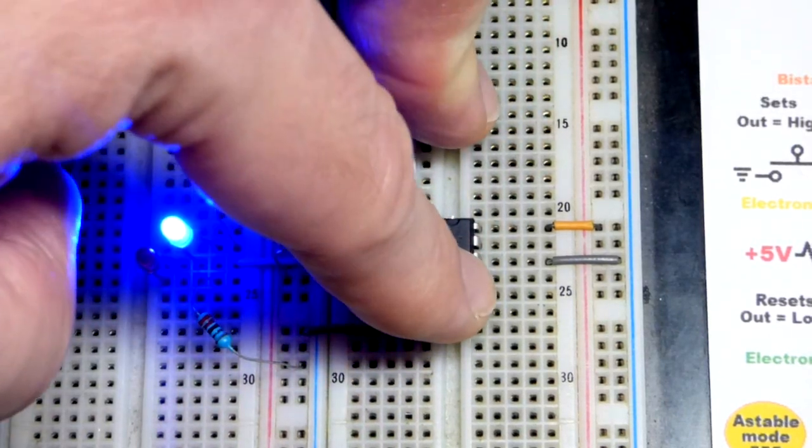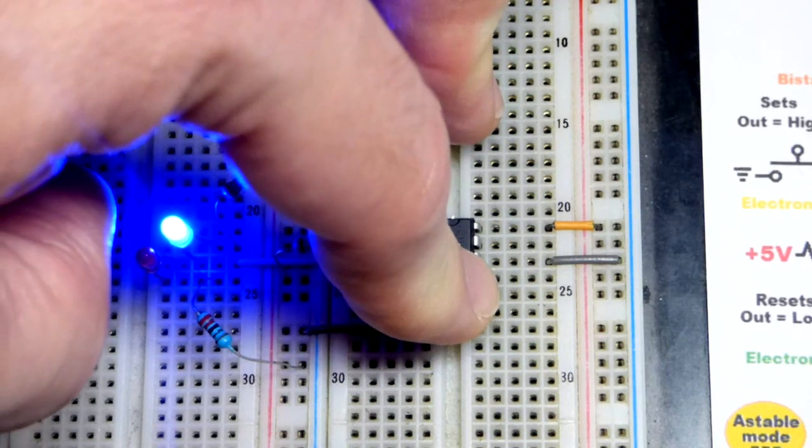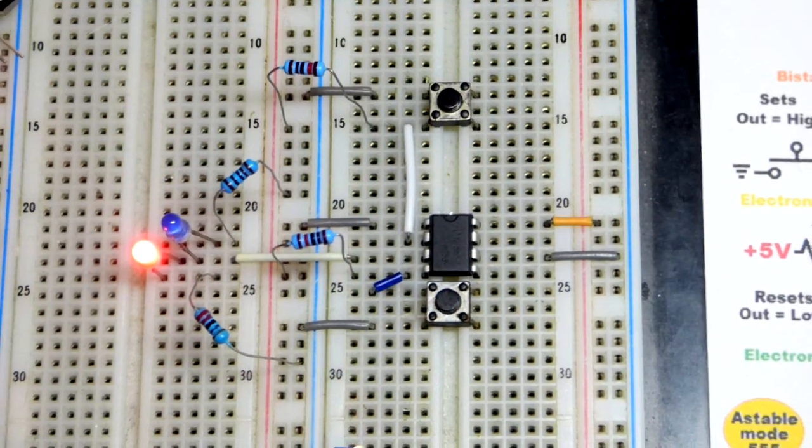If I hold them both then the reset pin is the more powerful pin so it will hold the output low.